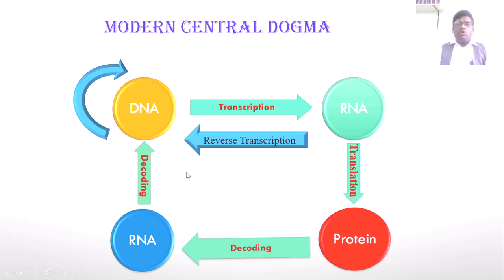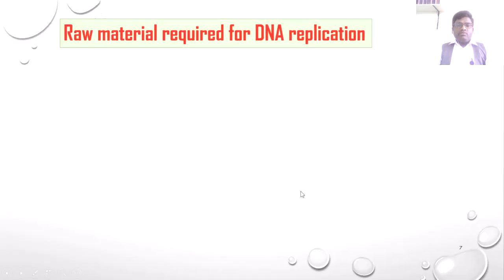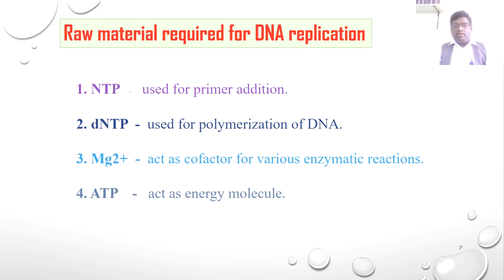This is about the central dogma of life, which operates in every living cell and organism. When we go for any process, we require raw materials. For DNA replication: the first raw material is NTP — nucleotide triphosphate — used for primer addition. ATP, GTP, CTP, and UTP are added as primer. Then we require deoxyribonucleotide triphosphates — dATP, dCTP, dTTP, and dGTP — for polymerization of DNA. We also require energy in the form of ATP and cofactors like Mg²⁺ for various enzymatic reactions.